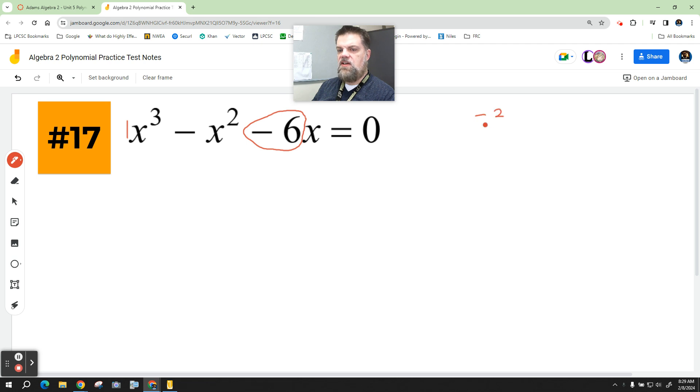So it could be like negative 2 over 1, it could be 2 over 1, it could be 3 over 1, it could be negative 3 over 1, it could be 6 over 1, and it could be negative 6 over 1.